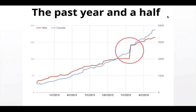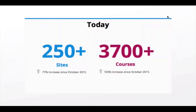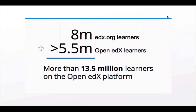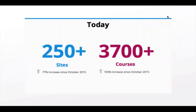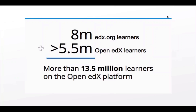This is another slide shown at the opening session showing the growth of Open edX since it was released. This is only going back to the first of 2015, but you can see just in the last year or so it's been really steady growth — up to around 300 sites worldwide and just about 4,000 courses, which represents a 77% increase since October last year in the number of sites, and a 105% increase since October 2015. If you look at the number of learners, you take the 8 million on edX.org and add approximately 5.5 million Open edX learners — there are more than 13.5 million learners around the world using the Open edX platform on a day-to-day basis.